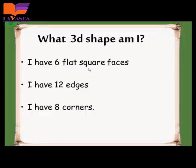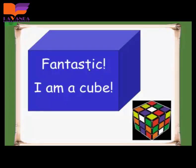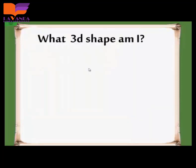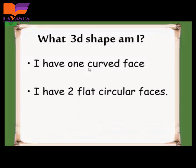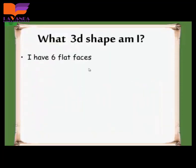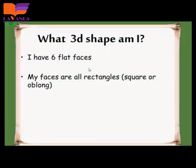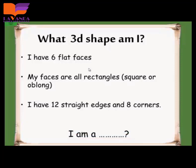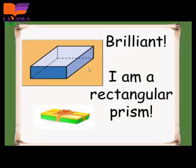I have 1 curved face and 2 circular faces or bases — I am a cylinder. I have 6 flat rectangular faces, 12 straight edges, and 8 corners — I am a rectangular prism.